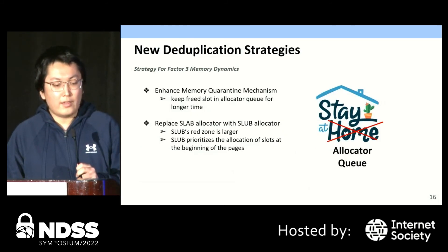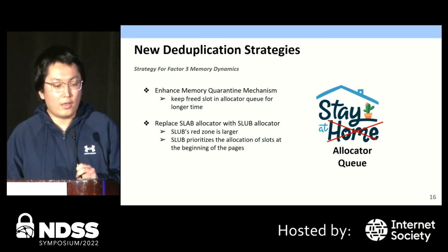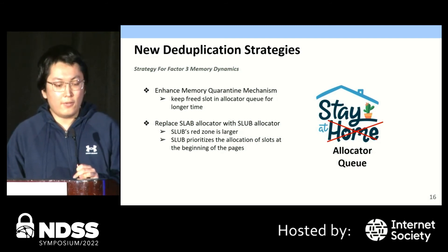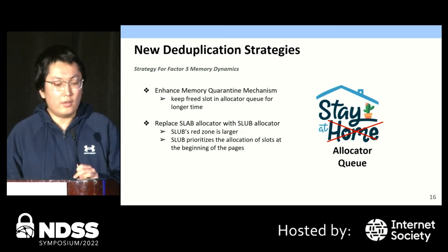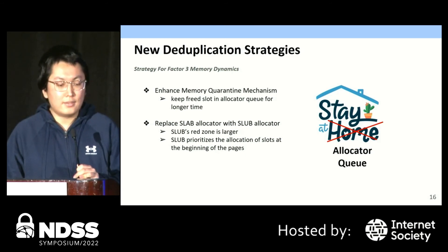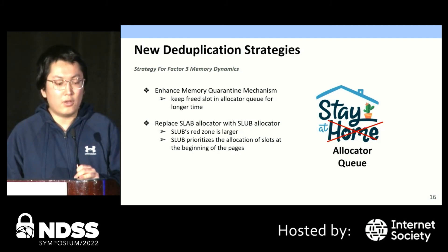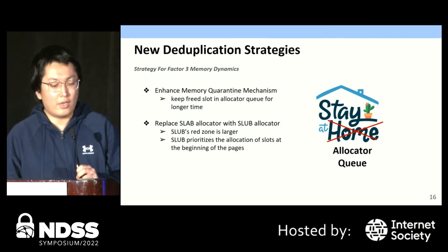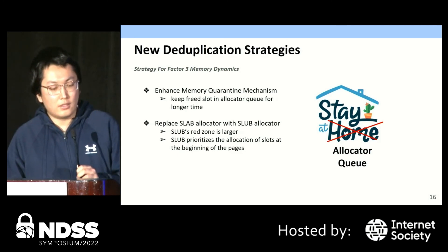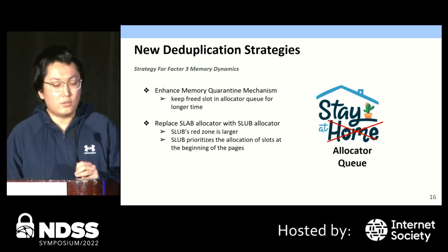For memory dynamics, the goal of our strategy is to reduce the randomization of memory layout. More specifically, we further enhance the memory quarantine mechanism by keeping free slots in the allocator queue for a longer time. Besides, we replace the slab allocator with a different slab allocator not only because it has a larger red zone, but also because it prioritizes the allocation of slots at the beginning of the page. In this way, we have a higher chance to catch the ground-truth behavior of the triggered bug.